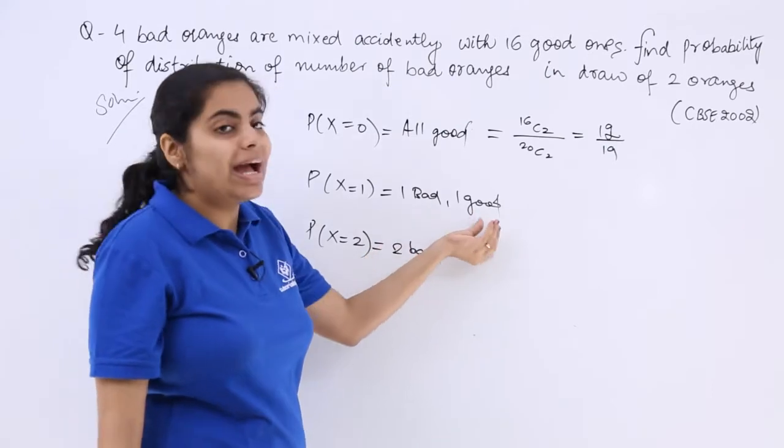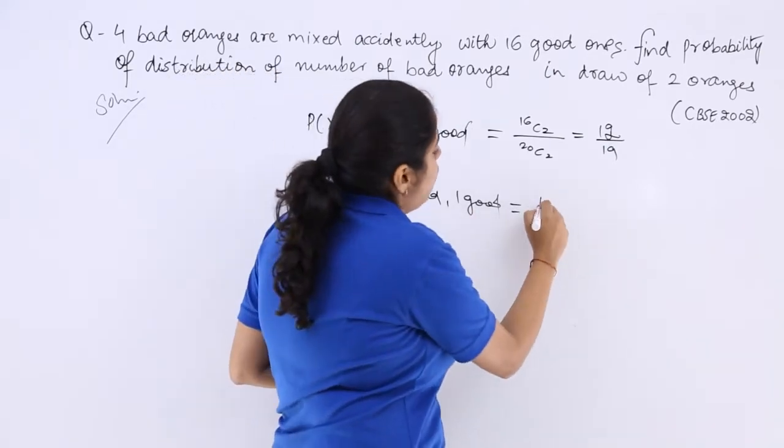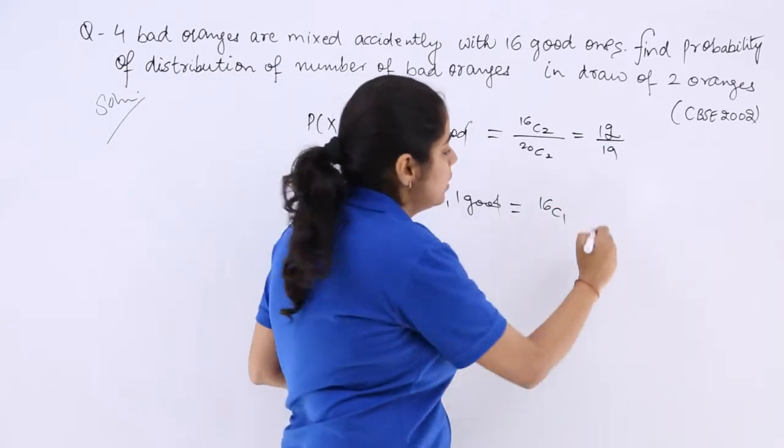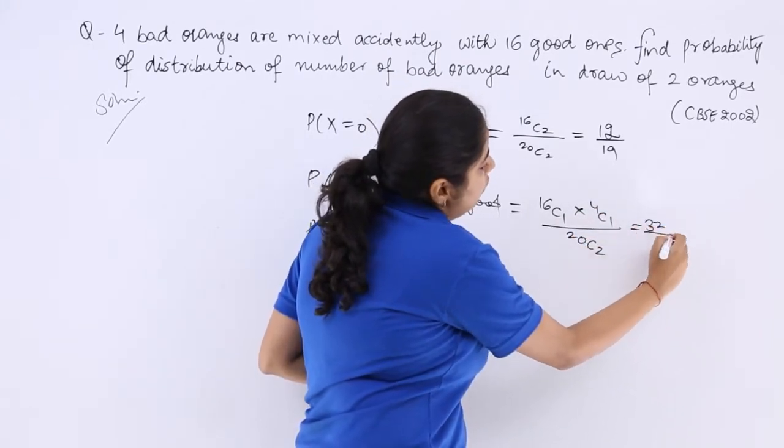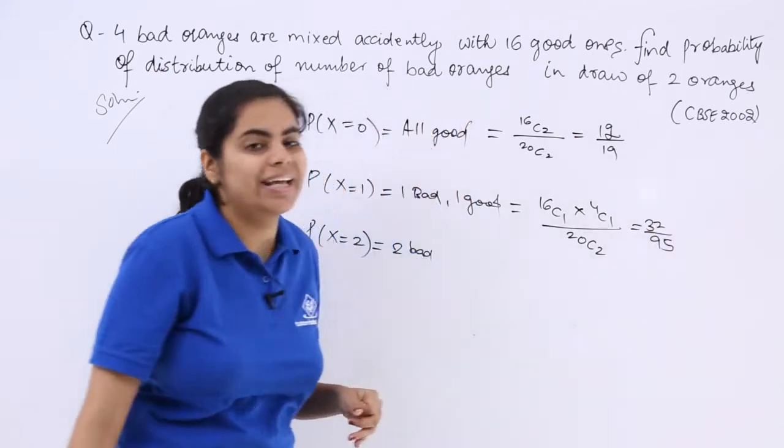Next, 1 bad 1 good means 1 from good section and 4 were bad and whole over is 20C2. Now this on calculation gives 32 over 95.